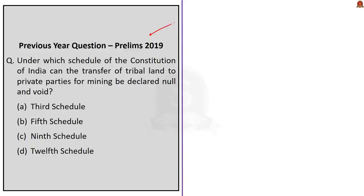The Third Schedule deals with forms of oaths or affirmations — wrong. The Ninth Schedule contains the list of central and state laws that cannot be challenged in courts — also wrong. The Twelfth Schedule deals with powers, authority and responsibilities of municipalities — also wrong. The correct answer is Option B, the Fifth Schedule, which deals with the administration and control of scheduled areas and scheduled tribes, including the transfer of tribal lands.